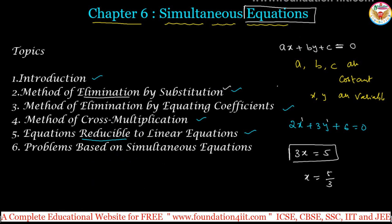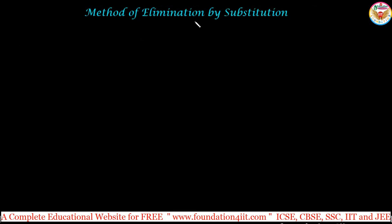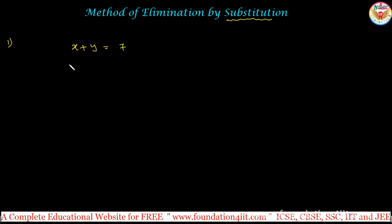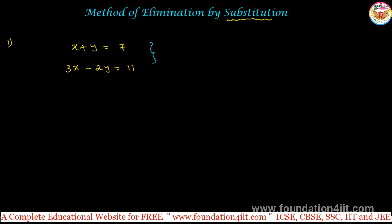Let us start with method of elimination by substitution in simultaneous equations. To solve the values, we have two methods in elimination: substitution and equating coefficients. Let us see how to substitute to find the answer. Let us take one example. Solve the following system of linear equations: x + y = 7 and 3x − 2y = 11. These are the two equations we have to solve by substituting.